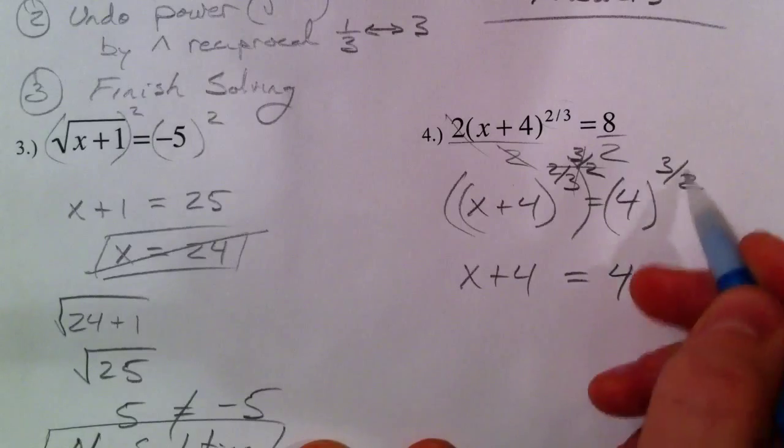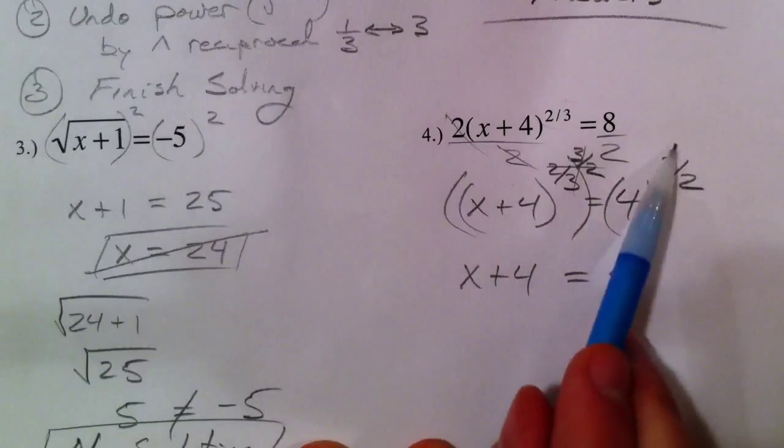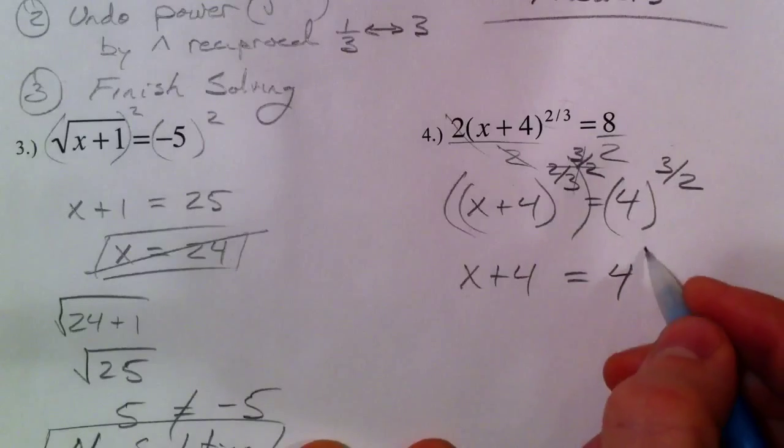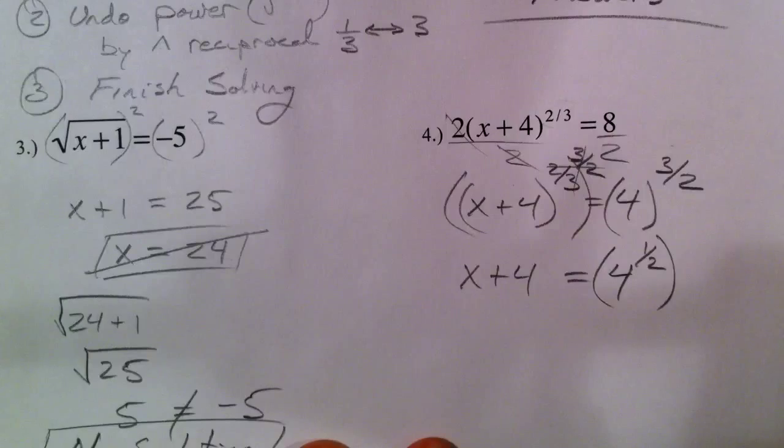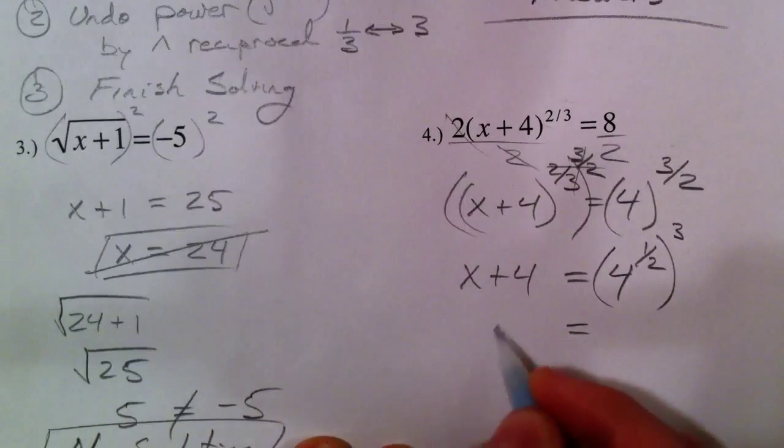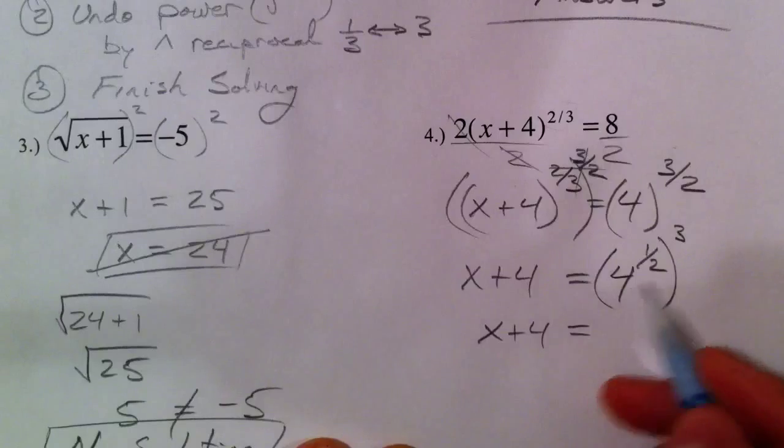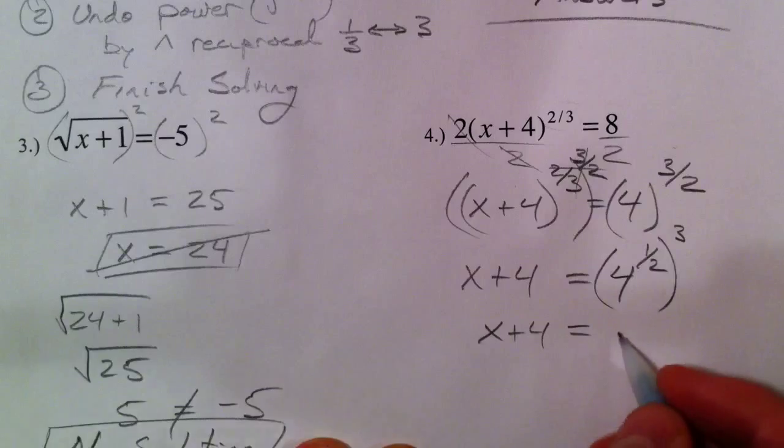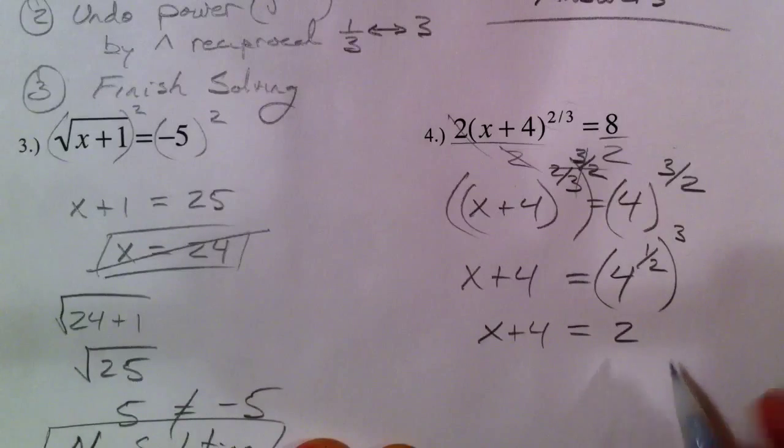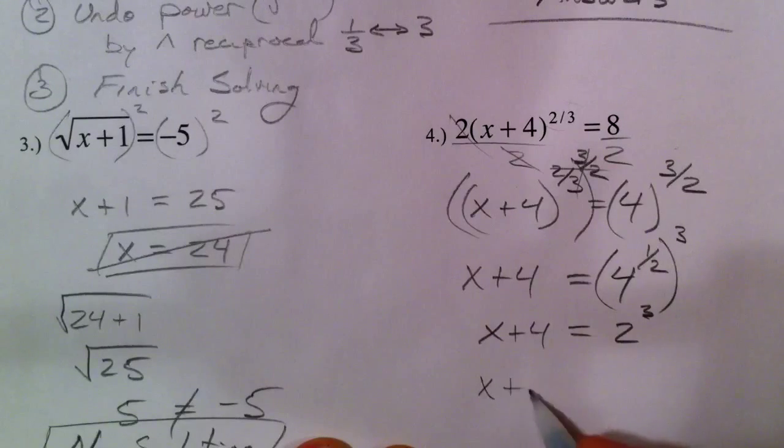So, we've been doing this without a calculator. We split up the 3 from the 2. And so, bring the 1 half first, 2 on the bottom so it's a 1 half, and then cube it. 4 to the 1 half power is the same thing as the square root of 4. The square root of 4 is 2, because 2 times 2 is 4. And then we cube it, because we've already taken care of the 1 half. So, 2 cubed is 8, because 2 times 2 is 4 times 2 is 8.